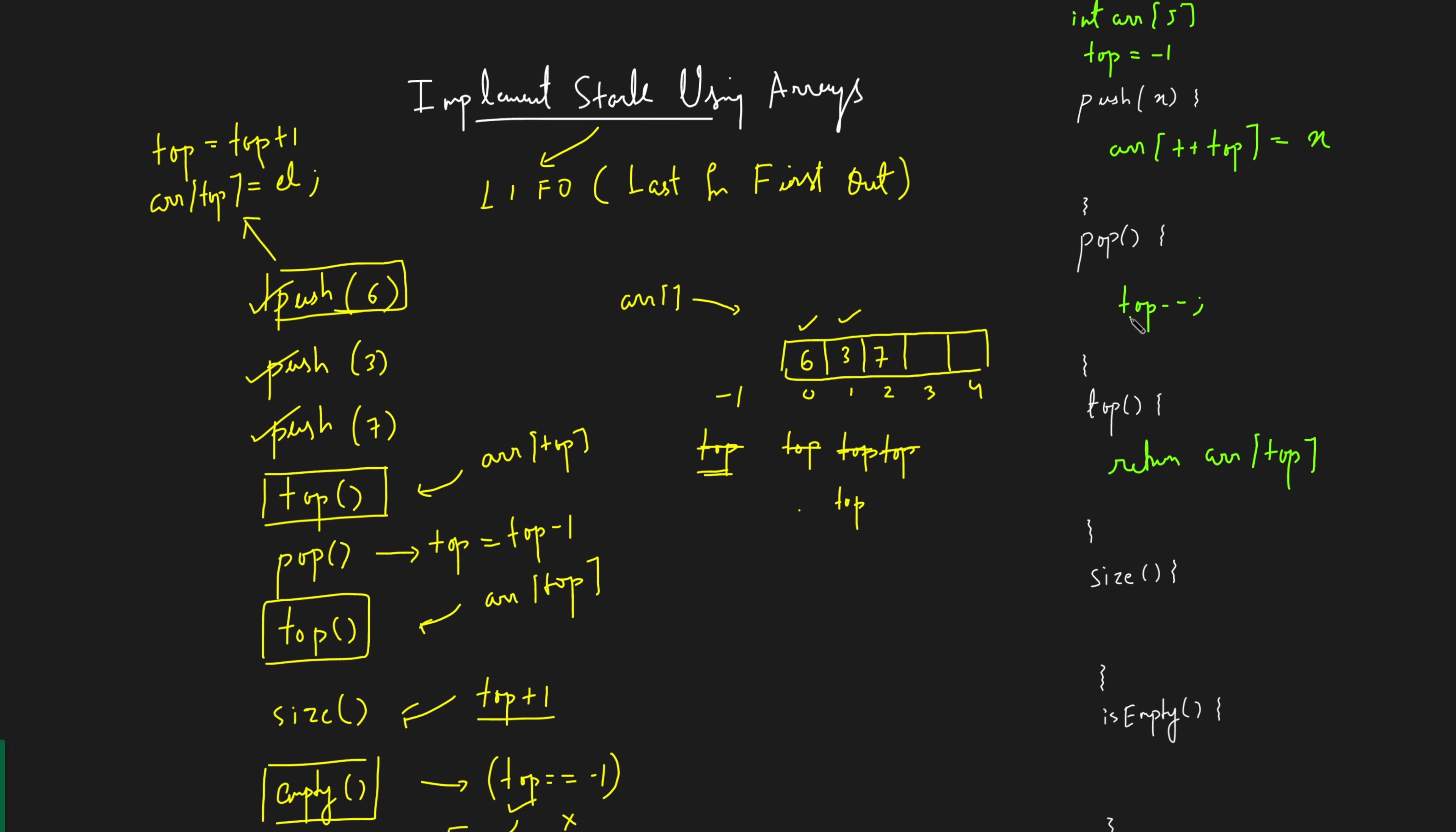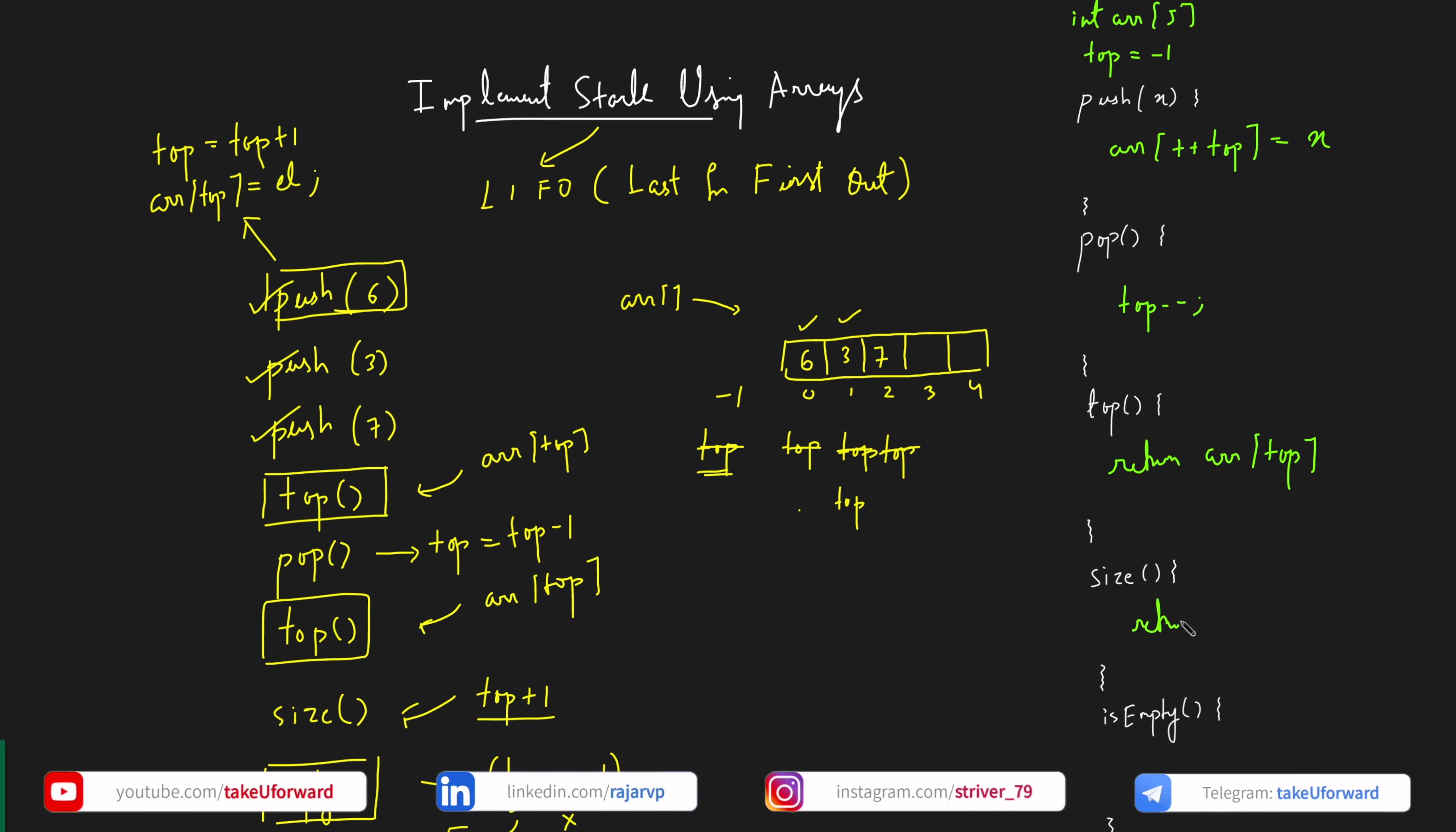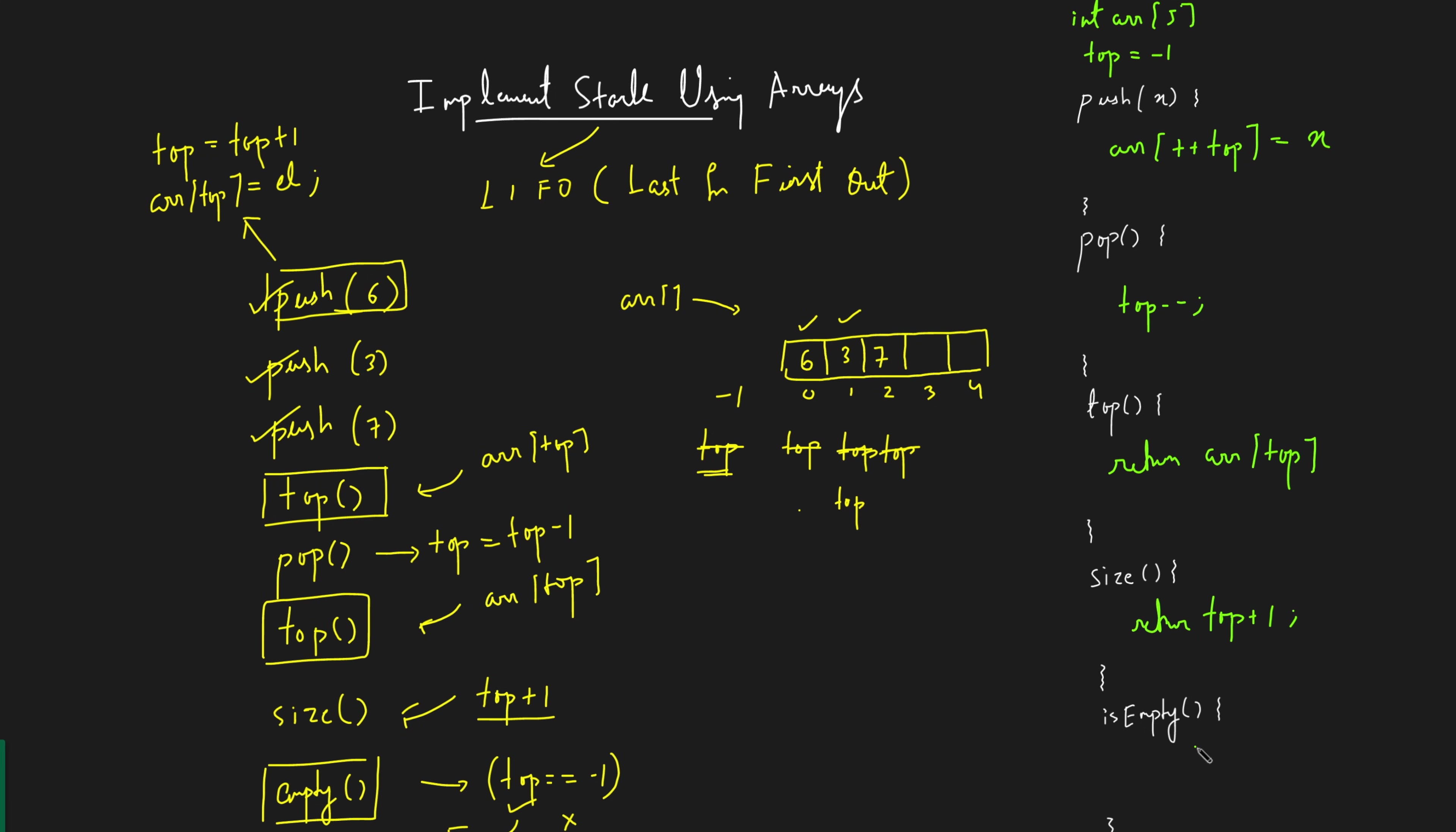Now can I say the top is nothing but return array of top. Now just if someone says you have to return over here also, please make sure you return whatever is at top plus one because you've reduced. If size, someone is asking you have to say return top plus 1. If someone is saying is empty, return top equal to equal to minus 1.